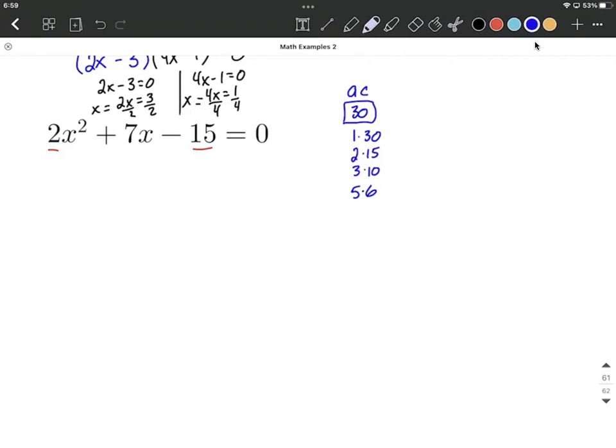This time, though, because it's a negative constant, a subtraction there, you're looking for the pair that subtracts to make the middle number, the 7. So as you look at these, we could say 30 - 1 only makes 29. 15 - 2 makes 13. 10 - 3 makes 7. That's the pair we're looking for. Or 6 - 5 makes 1. So again, the pair that we were looking for subtracts to make a 7. So we're going to go with 3 and 10.